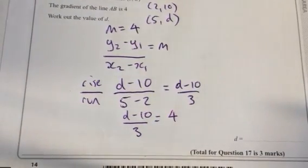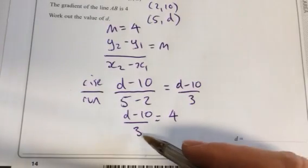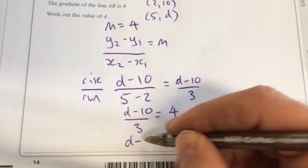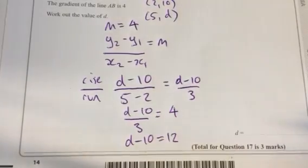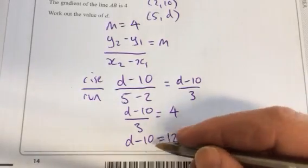Then we simplify it. Multiply by 3, so d minus 10 equals 12. Then we add 10 to 12.